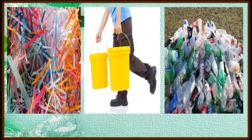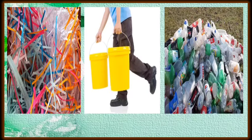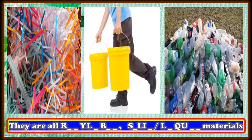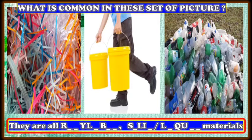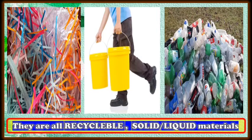Look at this picture, class. We have paper scraps, we have household liquid waste, and we have plastic bottle waste. So what can you see? They are all waste materials. So with the help of the available pictures, all you have to do now is to complete the sentence below. What is common in this set of pictures? Well, they are all what you call recyclable solid and liquid materials — these are all waste materials that can be recycled.